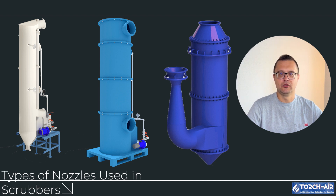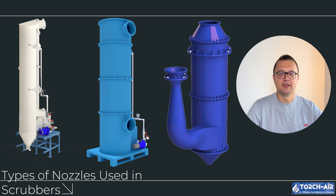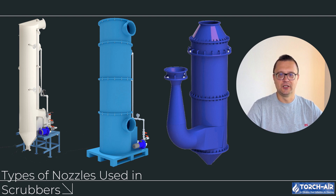In the world of scrubbers, choosing the right method — whether it's nozzles, water overflows, or liquid seals — can make all the difference in your system's efficiency and longevity. Nozzles are ideal for high-efficiency scrubbing with fine particles or gases, but in certain cases, simpler methods like overflows or tray systems may be more effective and require less maintenance. Thanks for tuning in. Until next time, keep your systems running smoothly and your air clean.